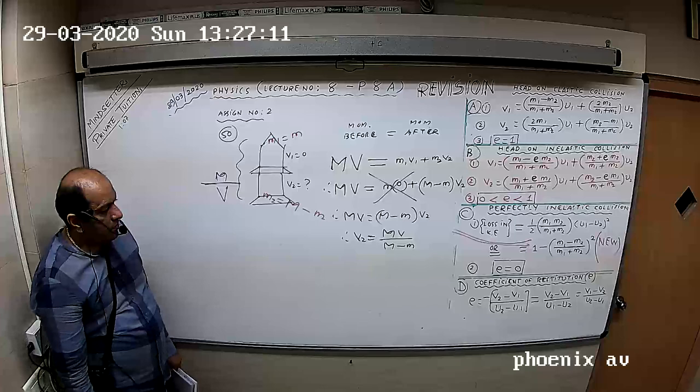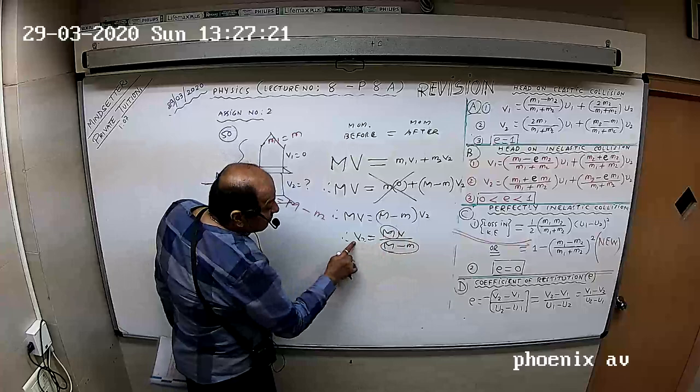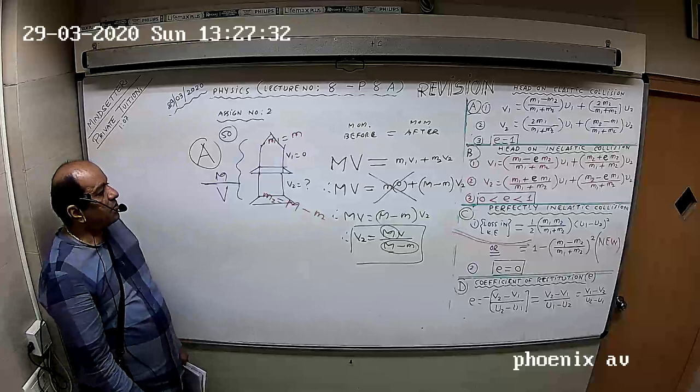So V2 should be MV upon (M minus M). Apply common sense: this ratio is going to be more than 1 and therefore V2 is greater than V. That is the logic. Answer to this question is D.